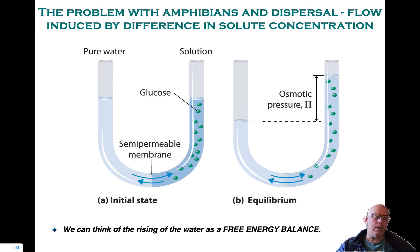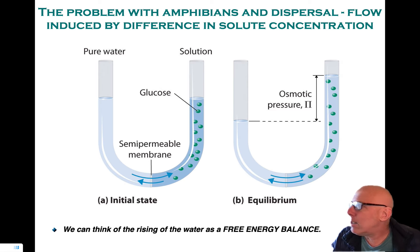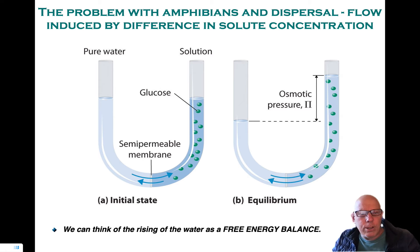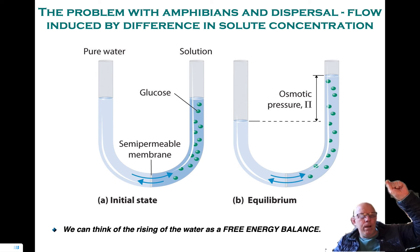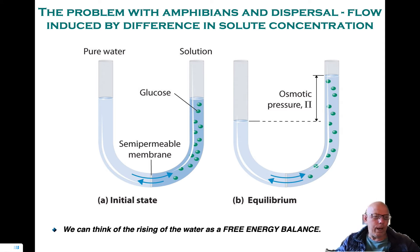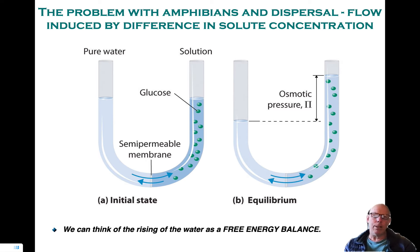In some previous vignettes, I talked about the ubiquitous nature of competition as dictating the processes in the world around us. Here is a perfect example. Work will be done in the sense that water will lift up above the level that it is on the left-hand side. So work has to be done — MGH-type work — and we will calculate that.